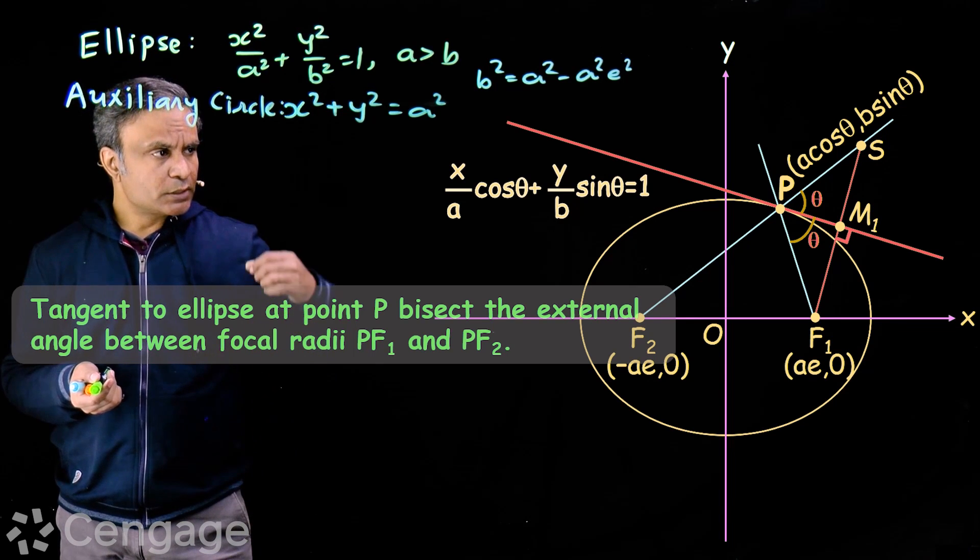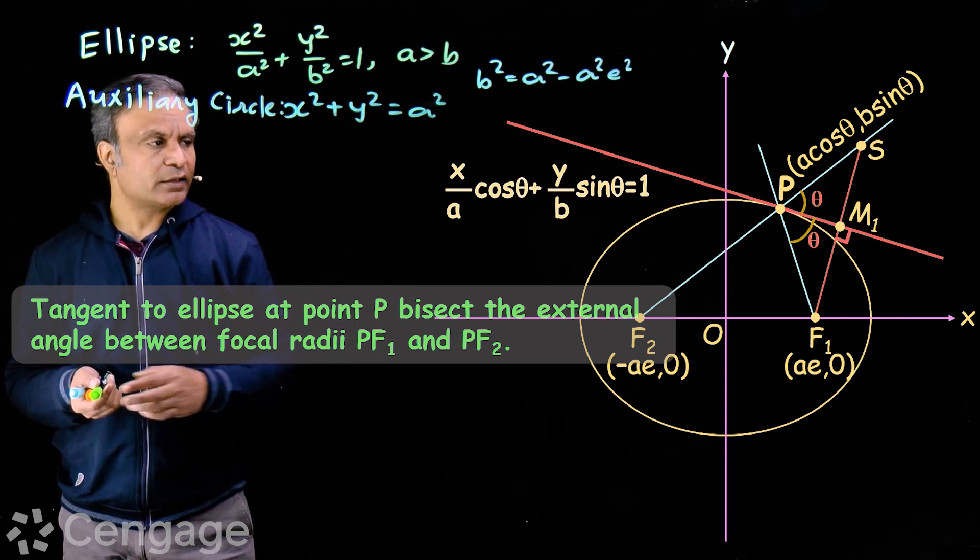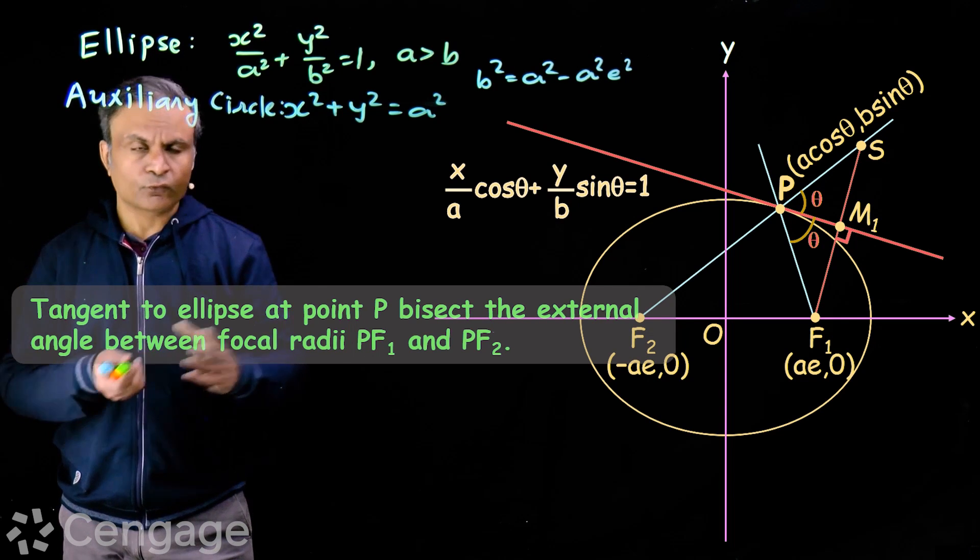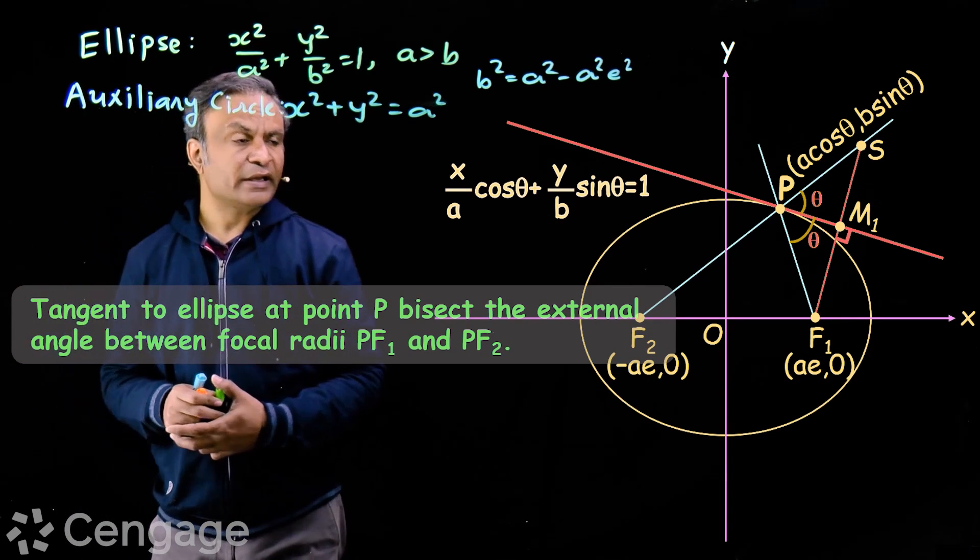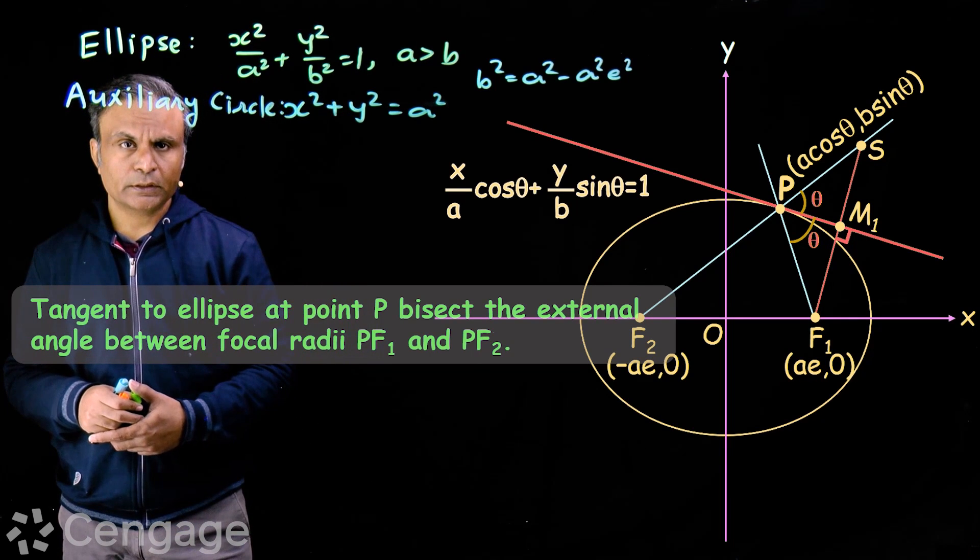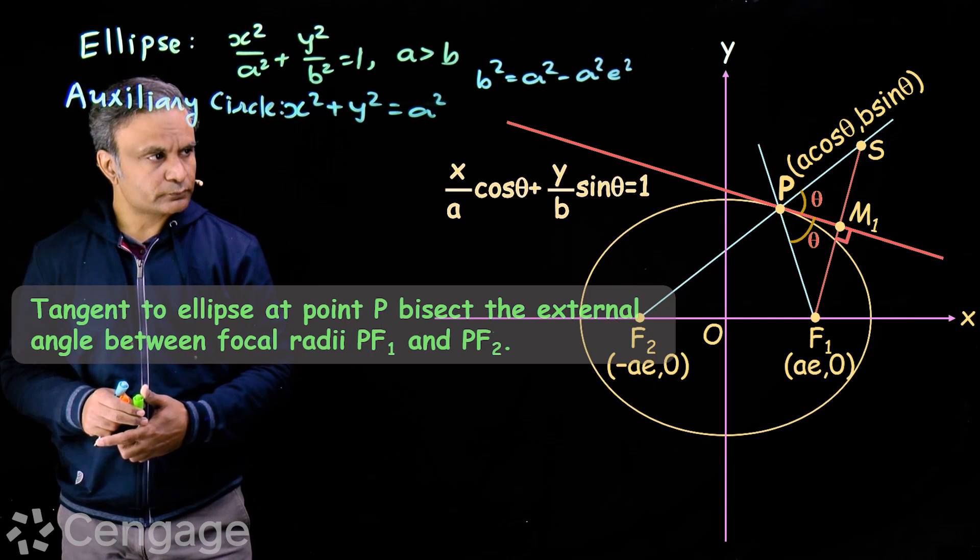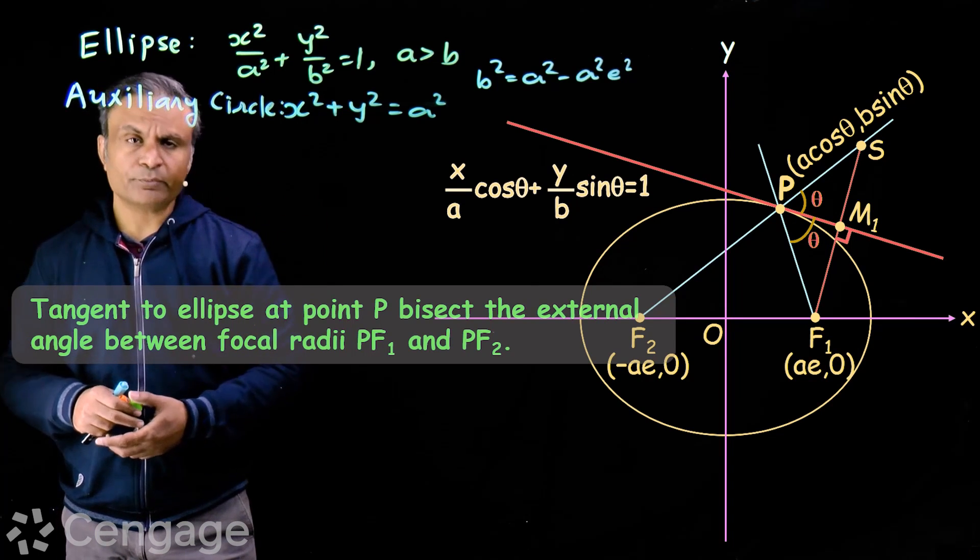That means tangent is one of the angle bisectors of lines or focal radii PF1 and PF2. The other angle bisector will be the normal. How do we prove this property?